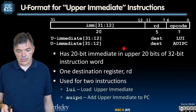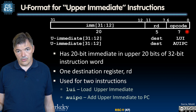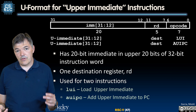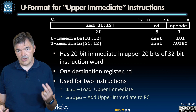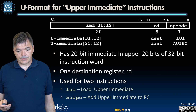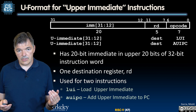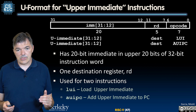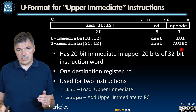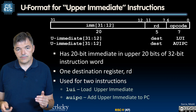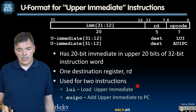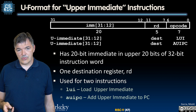Here is how the U-format instruction looks — it's fairly straightforward. It has an opcode in the lowest seven bits, the same field we have seen before, with two different opcodes for two instructions: LUI and AUIPC. LUI stands for load upper immediate — it loads an upper immediate into destination register RD and resets the bottom 12 bits to zeros. AUIPC adds the upper immediate to the program counter and stores the result in destination register RD. There are two separate opcodes for these two instructions.